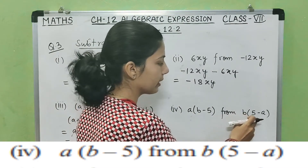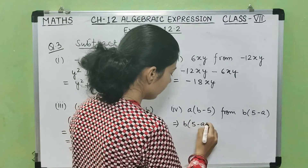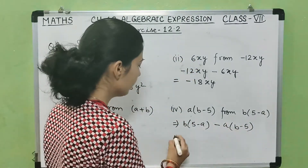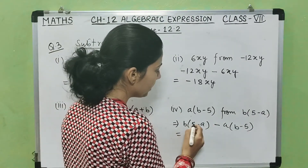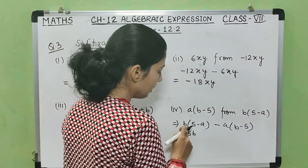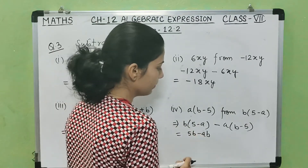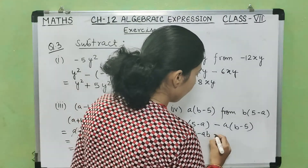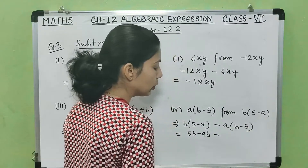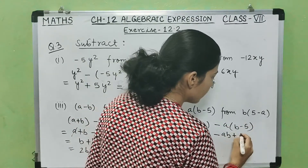Now the fourth part: subtract b(b minus a) from b(5 minus a). We write b(5 minus a) first, then minus. Opening the bracket, minus a multiplies each term: minus a into plus b is minus ab, and minus a into minus 5 is plus 5a.